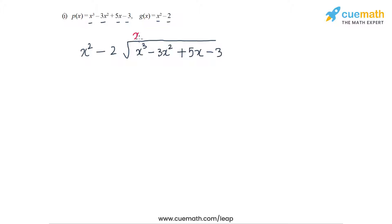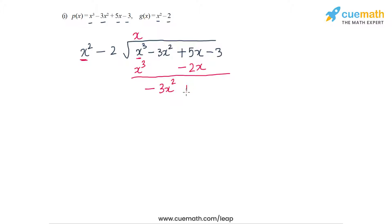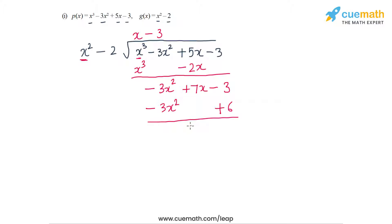The first multiplier will be x, because I need to take x² to x³. With multiplier x, I get the terms x³ - 2x. After subtracting, I get -3x² + 7x - 3. The next multiplier is -3, which gives -3x² + 6, and after subtracting again I get 7x - 9.